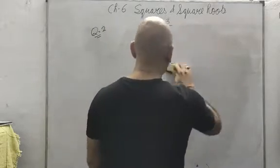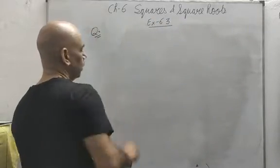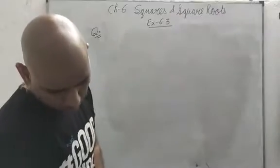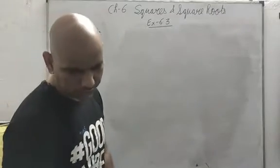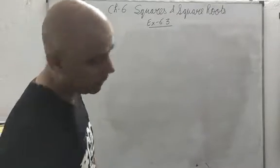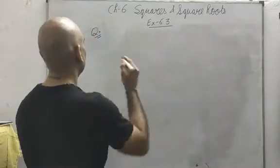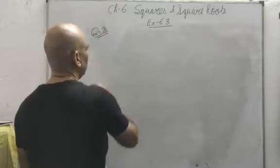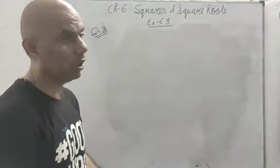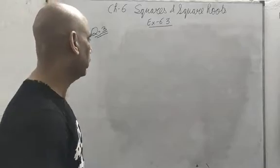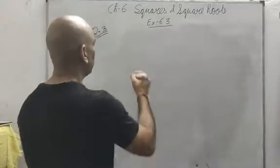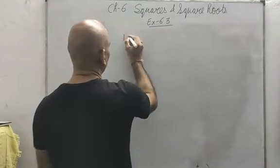Question number 3: Find the square root of 100 and 169 by the method of repeated subtraction. I am calculating 100; you people will do 169.